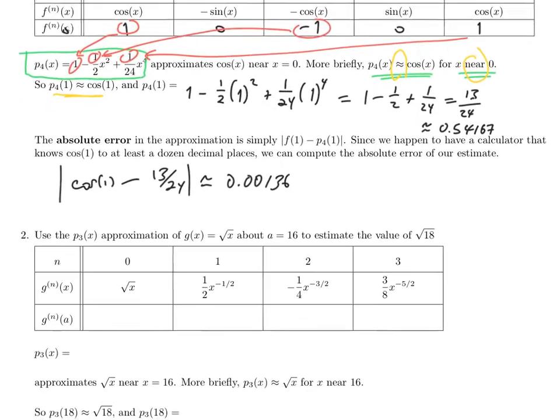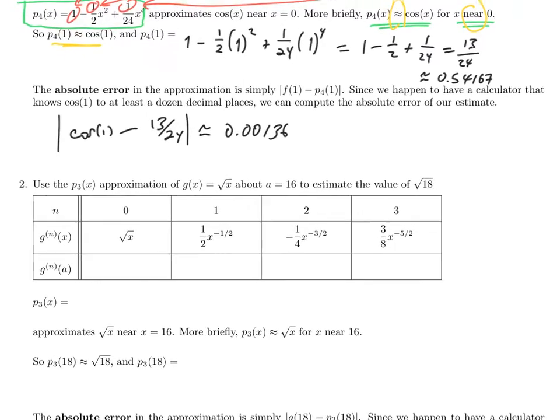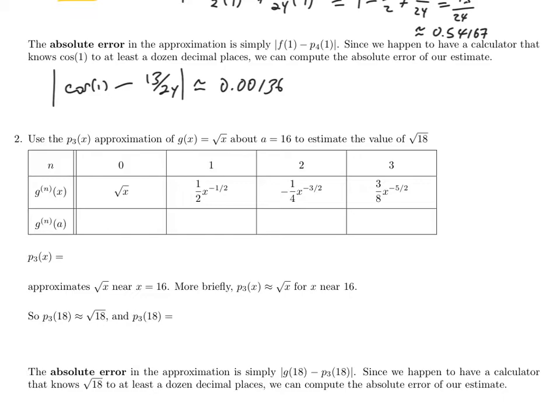So 13 over 24 is actually pretty close to the real value of cosine of one. All right, let's see it again with a function that we did not look at last time. And that's the square root function. And so to have some more practice at finding the Taylor polynomial, I encourage you to pause the video here. And first of all, verify that I got all these right as my derivatives starting with x to the 1 half. And then secondly, for each of those derivative formulas, we need to evaluate them at a equals 16.